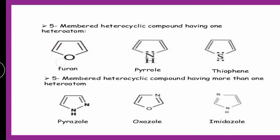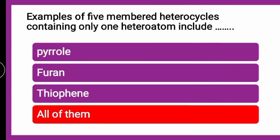This is furan, this is thiophene, and this is pyrrole. Pyrrole contains aza (nitrogen), furan contains oxa (oxygen), thiophene contains thia (sulfur). So the prefix used for sulfur is thia, the prefix used for nitrogen is aza, and the prefix used for oxygen is oxa. So these are all three 5-membered heterocycles which contain only one heteroatom. This subclassification we have also seen in part 1.